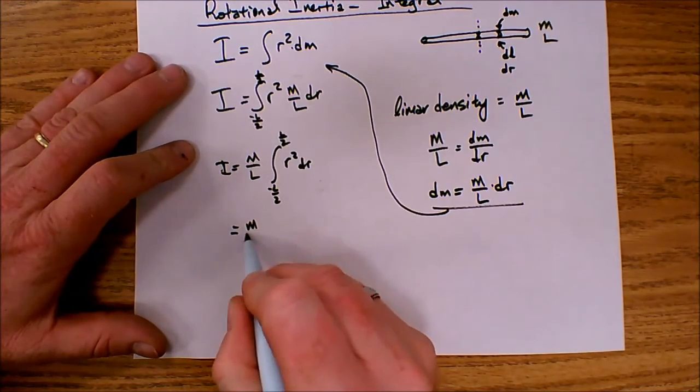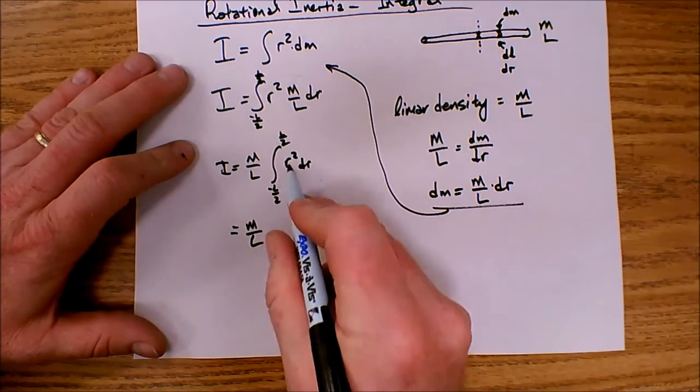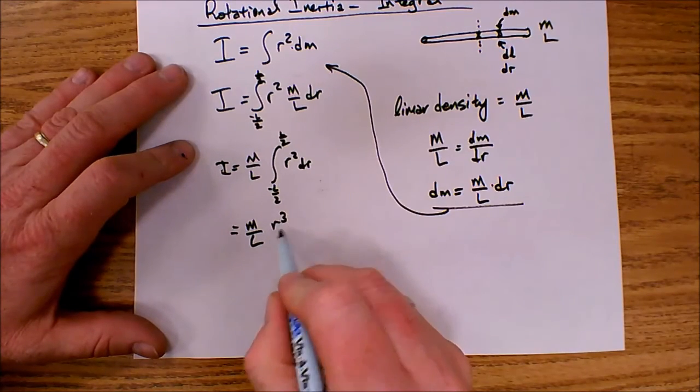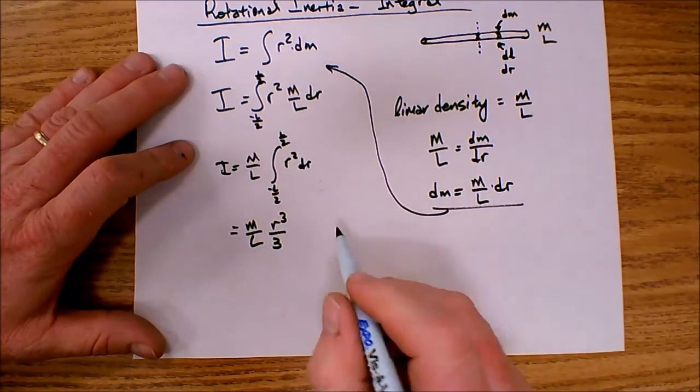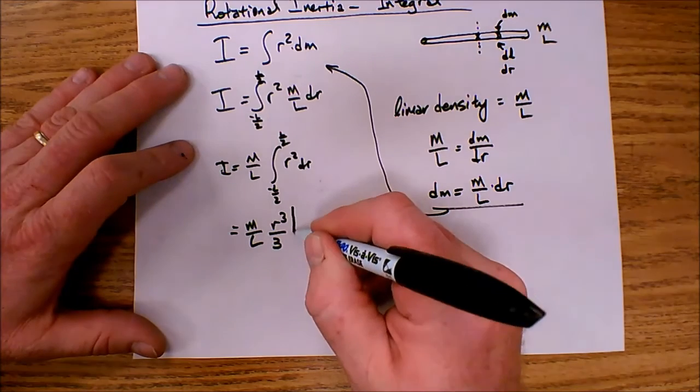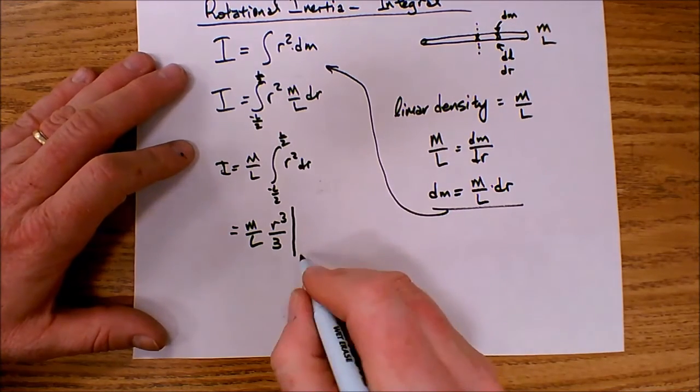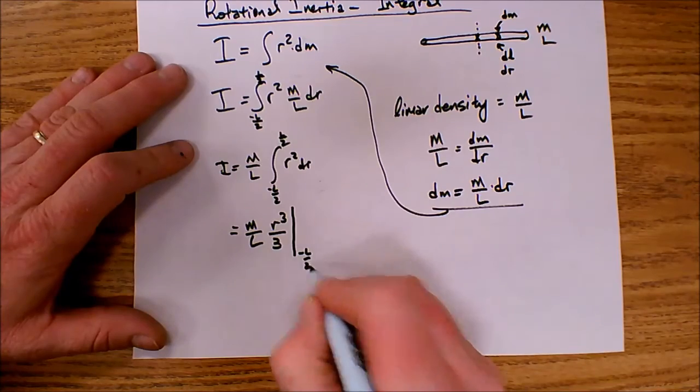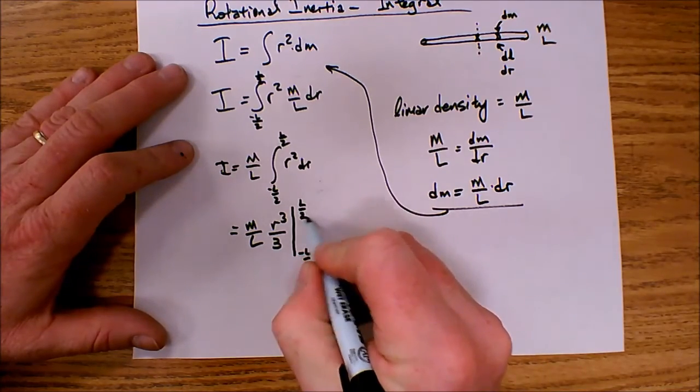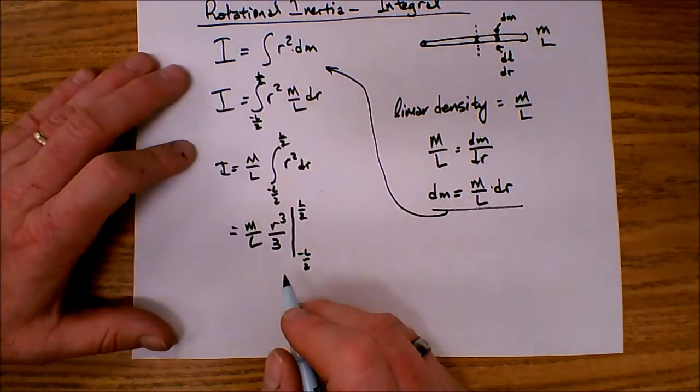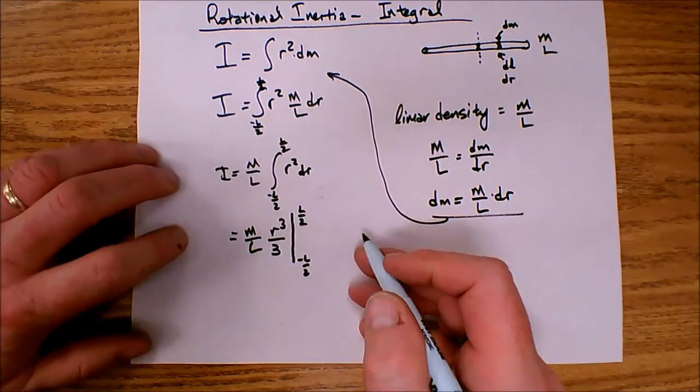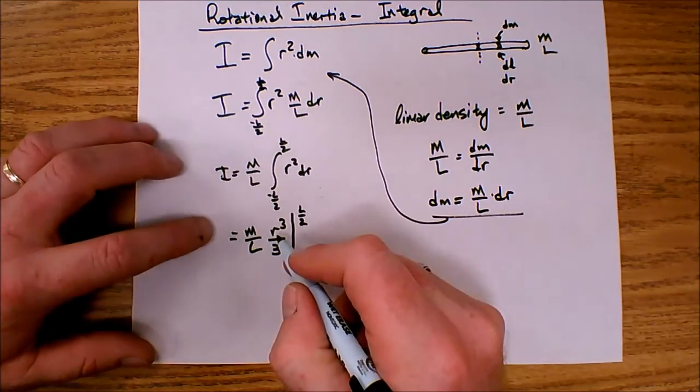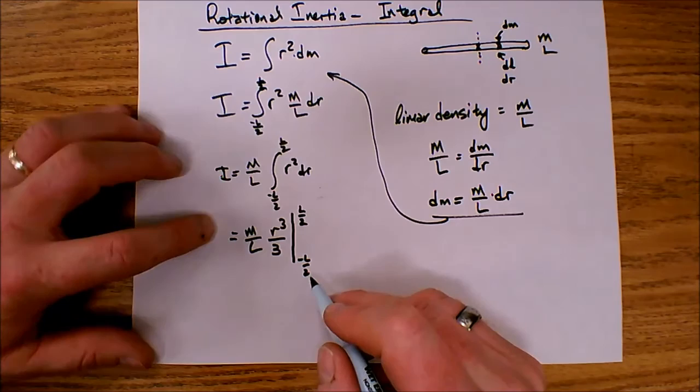So this becomes m over l is still there, and then evaluating the integral I get r to the third divided by 3. And now I need to evaluate that. And so I do a vertical line here that means I'm going to evaluate it from minus l over 2 to positive l over 2. And when I do it this way all I need to do is plug in the final value to my function and then minus plugging in the initial value.